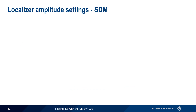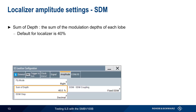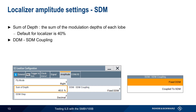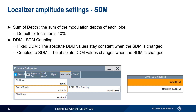The only remaining localizer amplitude settings are related to Sum of Depth of Modulation, or SDM. SDM is simply the sum of the modulation depths of each lobe, and the default value for localizer signals is 40 percent. The parameter DDM-SDM coupling relates how DDM and SDM interact. If fixed DDM is used, the difference in depth of modulation doesn't change when SDM changes. If coupled to SDM is chosen, the absolute value of DDM will change if SDM is changed. Normally, these values can be safely left at their default values.